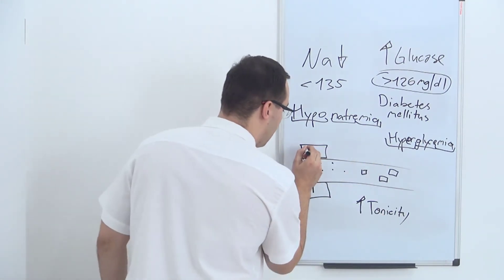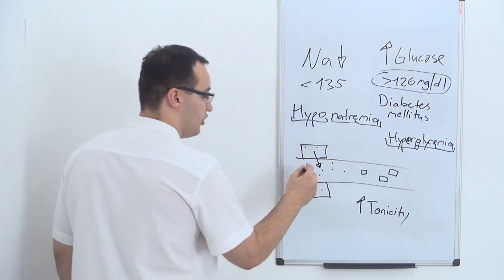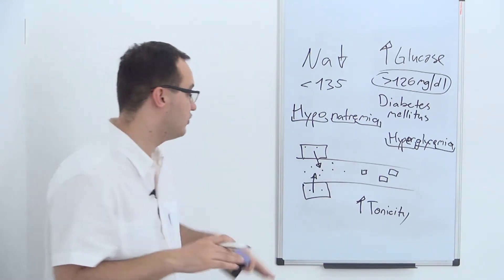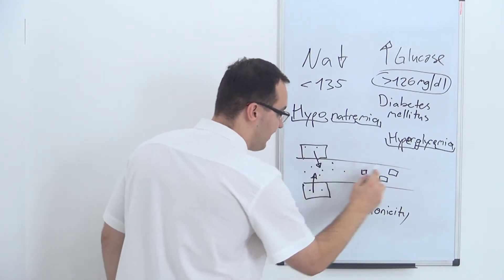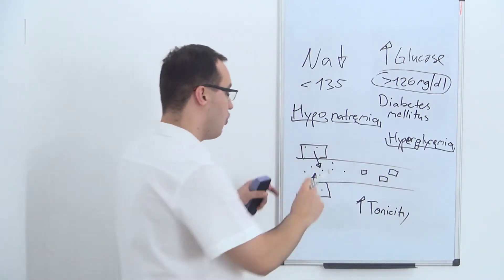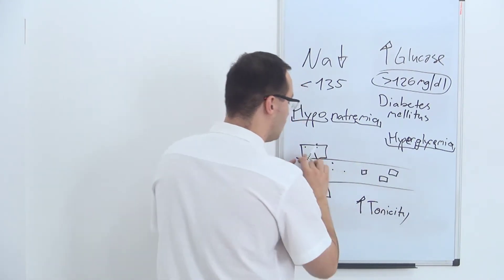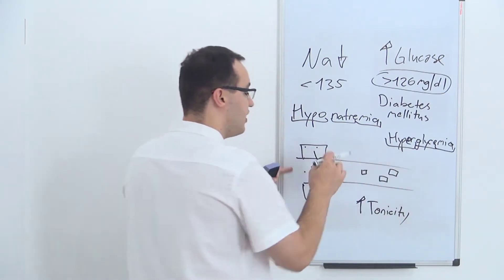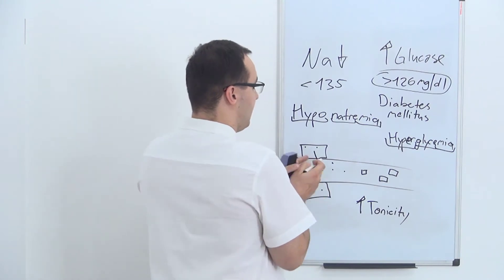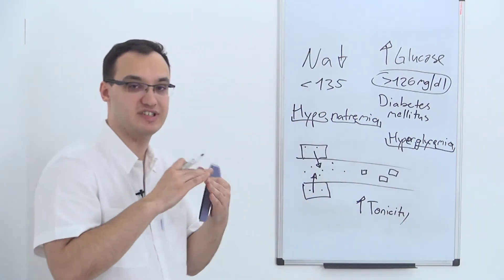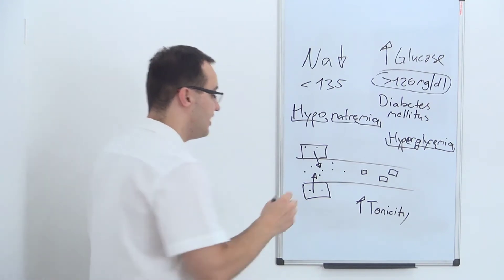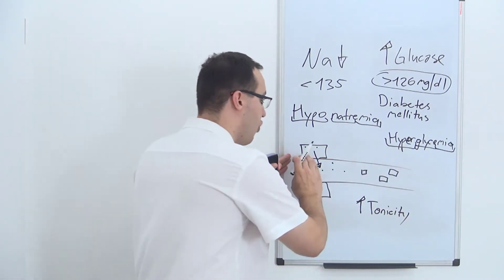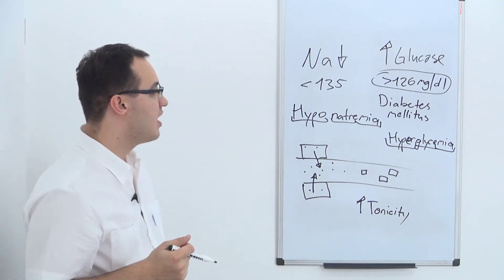Water tends to move toward the higher concentration. If we have only a few molecules in the cell and many in the bloodstream, the water moves there to make a concentration balance — so that the concentration inside the cell and in the vascular system becomes equal. When the concentration of solutes and glucose is very high in the blood vessel, the water moves from the cell into the bloodstream to reduce that high concentration.